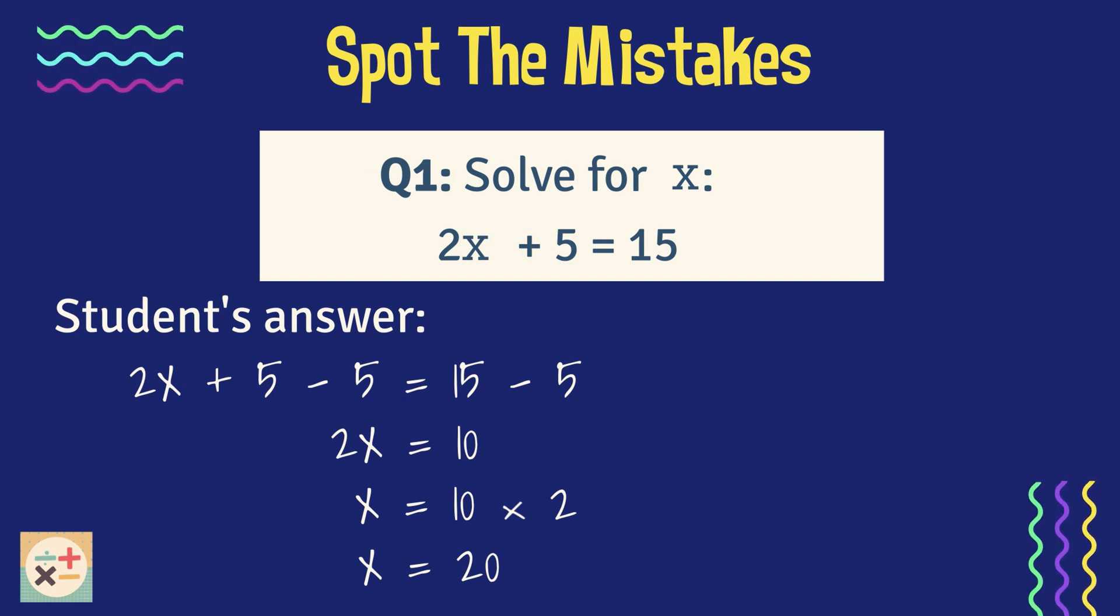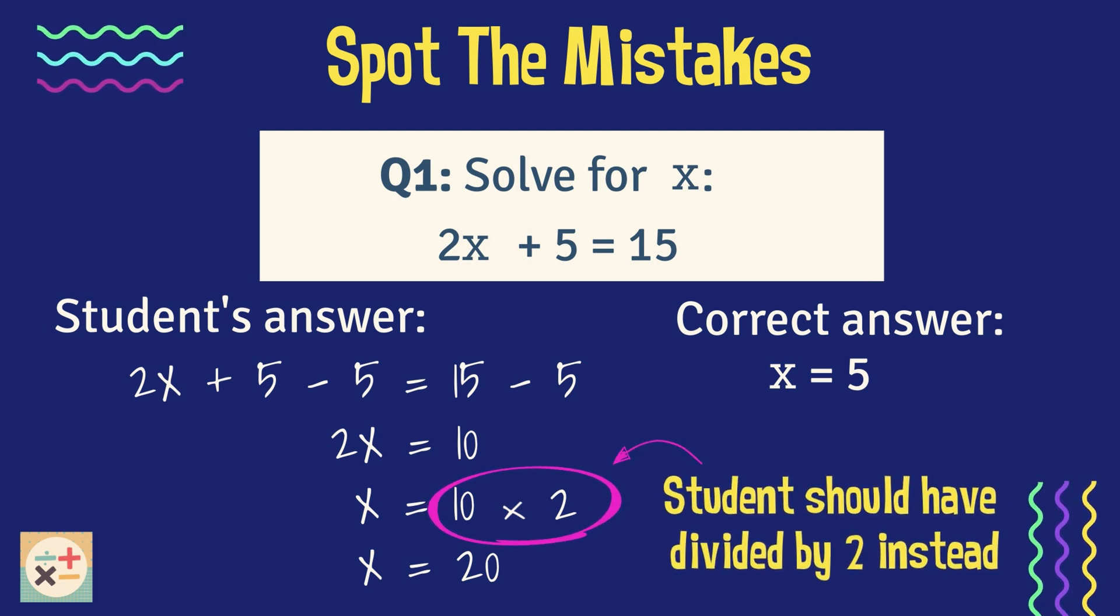To help you spot the mistake, here is the correct answer, which is x equals 5. Hopefully you have spotted where the student made an incorrect calculation. Here, instead of dividing by 2 to find the value of x, they multiplied by 2, leading to an incorrect solution. Up until that point, they had correctly rearranged and simplified the equation.